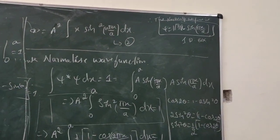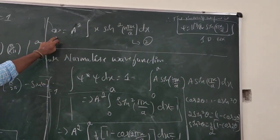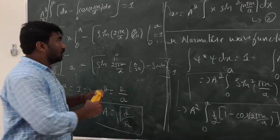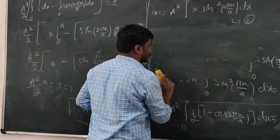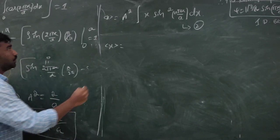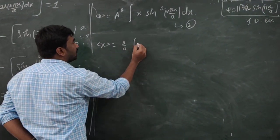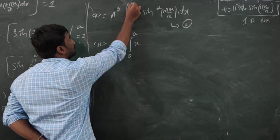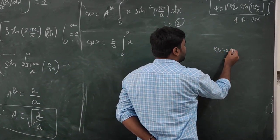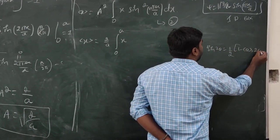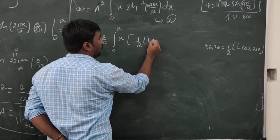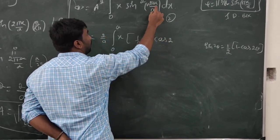Now we have the value of A. We substitute the normalized wave function into the expectation value expression. The expectation value of x equals A² times the integral from 0 to a of x sin²(πx/a) dx. Again we apply the identity sin²θ = (1/2)(1 - cos2θ), where θ = πx/a.